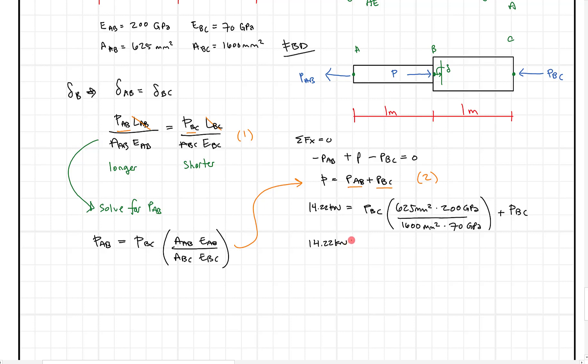So when we do this out, we get 14.22 kilonewtons has to equal PBC times 1.1607. And it's actually unitless, so if we look at this, the millimeters squared cancel out, the GPas cancel out. And we get to add that to PBC. So now I'll go ahead and factor. So 14.22 kilonewtons equals PBC times 1.11607 plus one. So that 2.11607. And when we solve for PBC, we get a value of 6.72 kilonewtons.